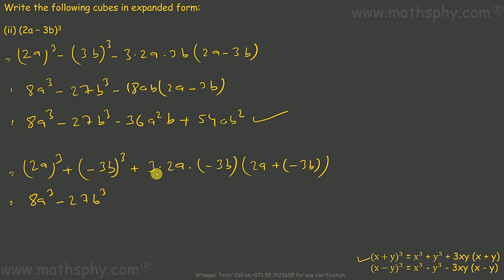This would be 3 into 2 gives 6, into 3 gives 18, minus 18ab, and this would be 2a minus 3b.